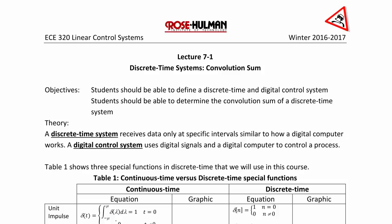Lecture 7-1: Discrete Time Systems Convolution Sum. The objectives for Lecture 7.1 are that students should be able to define a discrete time and digital control system, and students should be able to determine the convolution sum of a discrete time system.